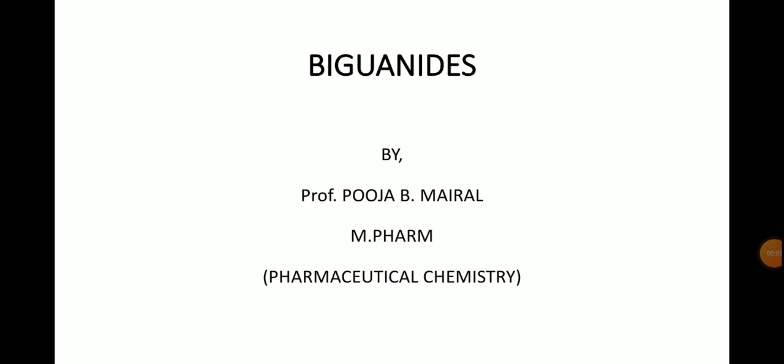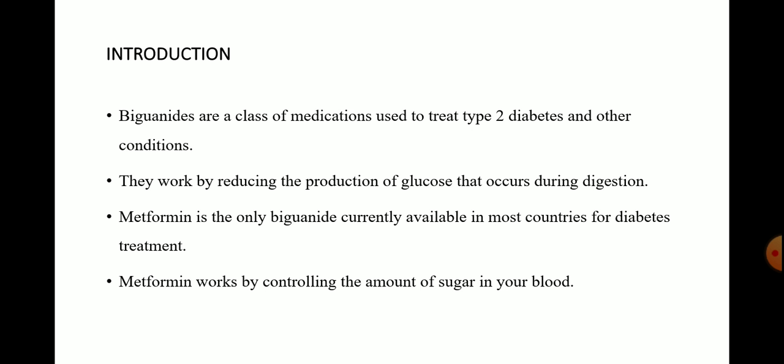Hello and welcome to medicinal chemistry classes. Today we will discuss about the next class of anti-diabetic drug, that is your biguanides. Biguanides are a class of medication used to treat type 2 diabetes and other conditions.